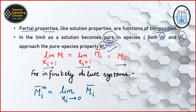For infinite dilution — if we have a binary solution with x1 and x2, and if we say it's a dilute solution in species 1 — then we have to take the limits of the partial molar property with x1 tending towards zero, because in that case our solution is becoming dilute in species 1. This concept will help us in solving many problems.